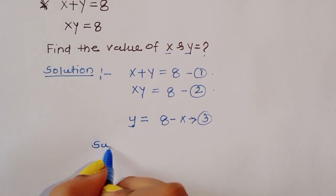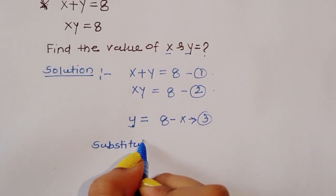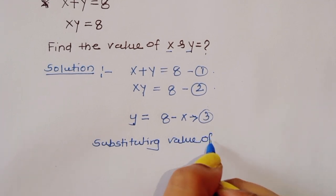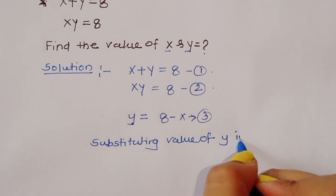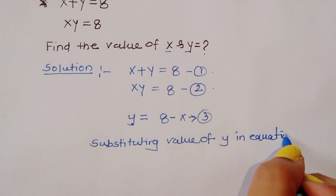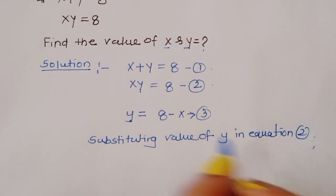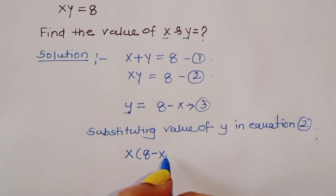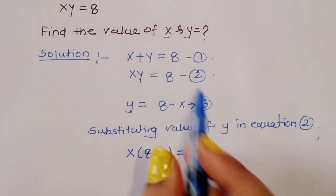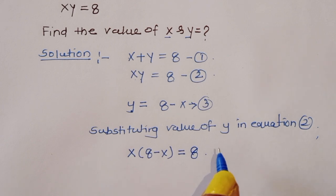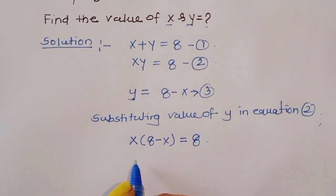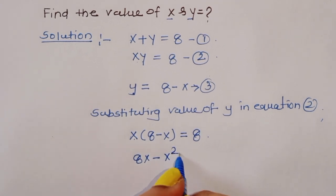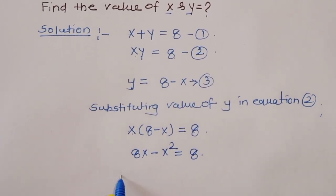Substituting y into equation 2, we get x times (8 minus x) is equal to 8. Expanding: 8x minus x squared is equal to 8.